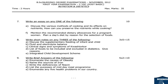Moving on to November 2012 question paper. First question: Discuss the various methods of cooking and its effects on nutrients — how can you preserve the nutrients while cooking? Second question: Mention the recommended dietary allowances for a pregnant woman and plan a day's diet with reasons for food selection for a pregnant mother. Out of these two, answer any one — 10 marks. Short notes (any 3 of 5, 5 marks each): supplementary feeding of infant and child; fluid and electrolyte balance; clinical signs and symptoms of kwashiorkor; list foods to be included and excluded in diabetes; ICDS — Integrated Child Development Scheme. Brief answers (2 marks each): enumerate causes of obesity; name the sources of iron; deficiencies of niacin; purposes of midday meal program; enumerate any 5 health problems in our country.